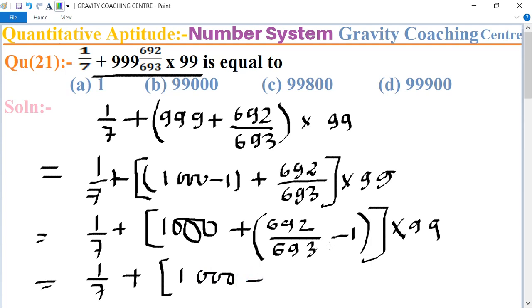Thousand plus 1 upon 693. Take the LCM, which is 693. After calculating, it gives a result as 1 upon 693.